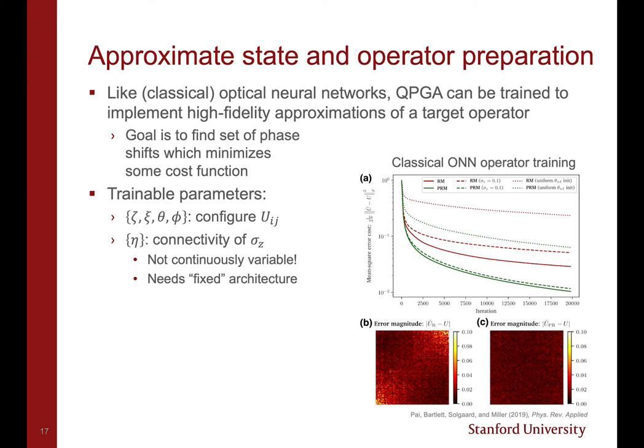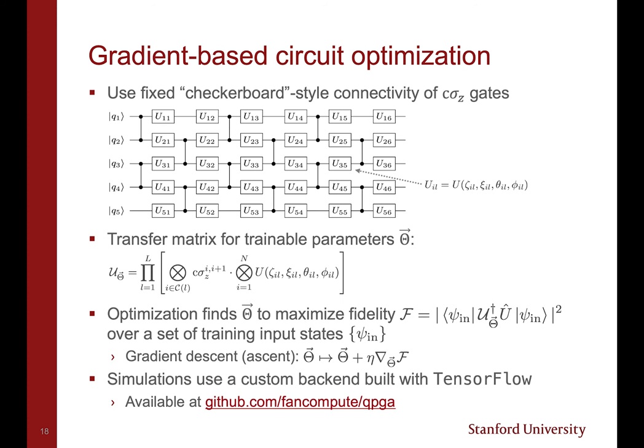The trainable parameters are the single qubit phase shift values. However, the η phase shifts, which adjust the controlled-Z connectivity between adjacent qubits, are not continuously variable or trainable, so we need a fixed circuit architecture to train around.